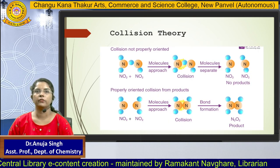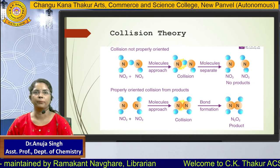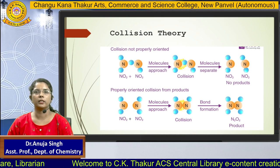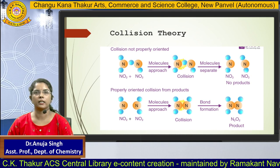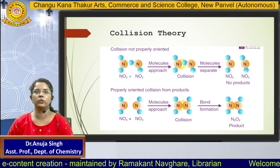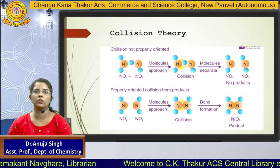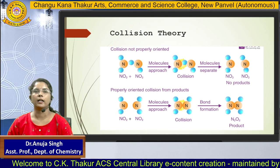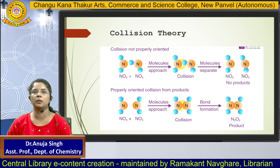Looking at a diagram to explain this theory: if two molecules are not properly oriented, when they come together there will be no product formed. In the second diagram, two molecules are coming together in proper orientation with no steric factor and possessing the minimum required activation energy. When they collide, they form a product. The requirements for converting reactants to products are: collision frequency, activation energy (minimum energy), and proper orientation with no steric hindrance.